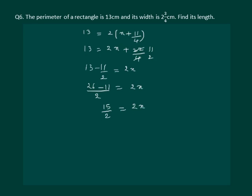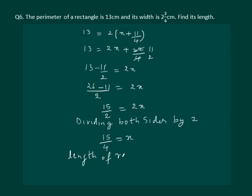Now dividing both sides by 2, we get 15 by 4 is equal to x. Hence the length of the rectangle is equal to 15 by 4 cm, which is also equal to 3 and 3 by 4 cm.